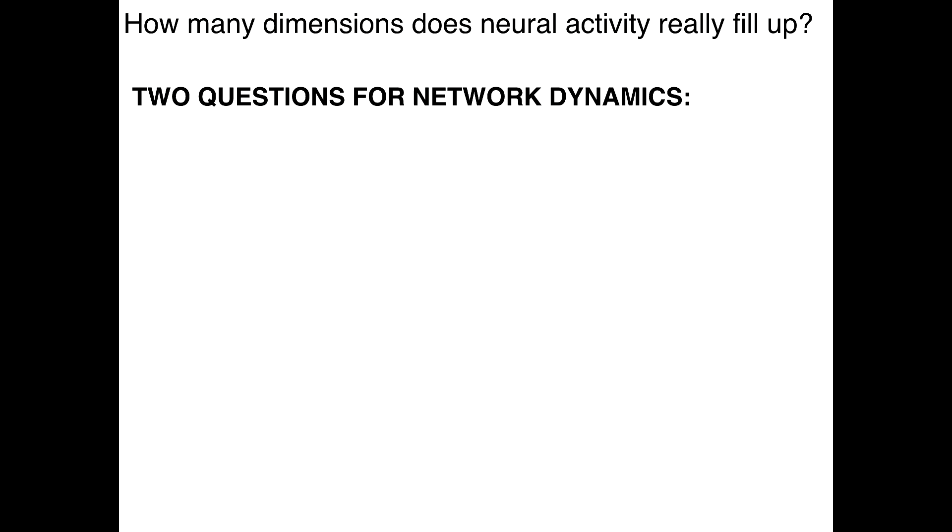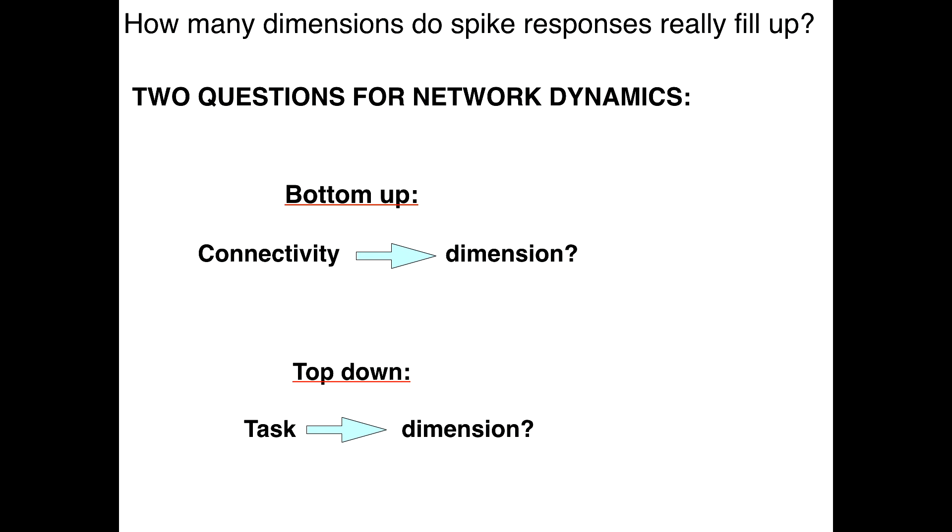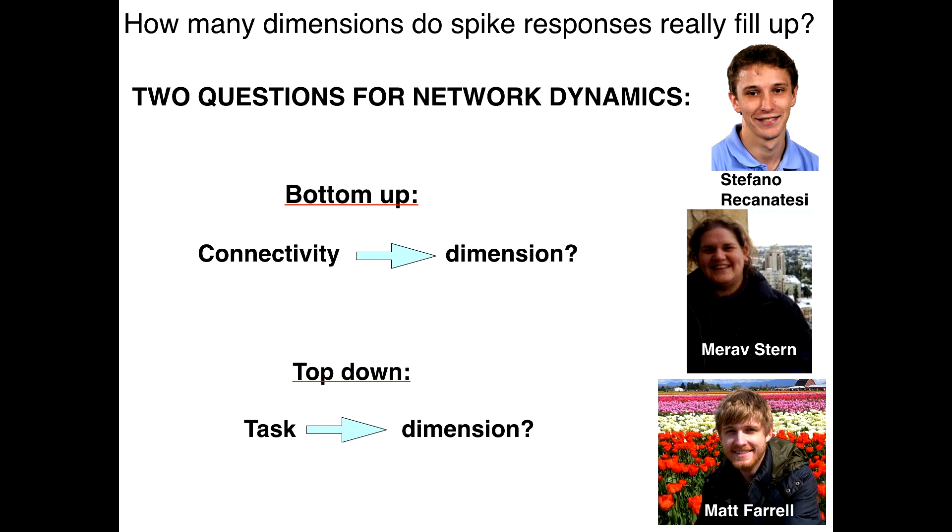So motivated in this way to actually think about this problem, we want to ask a couple of questions from a mechanistic or dynamical point of view. The first comes from the bottom up. Can we say anything systematic about how it is that a network's connectivity passed through its dynamics ends up determining the dimensionality of this representation? And the second one comes from the top down. If we don't just consider arbitrary connectivity, but those that are enforced by a network learning a particular task, what is it that we can say about the dimension of the activity that the network dynamics produces? These are the people who are leading the work, Stefano Fusi, Merov Stern, and Matt Farrell. And we'll start with the bottom up question.